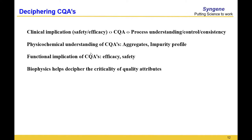It becomes important to physico-chemically understand the CQAs. When we say CQAs, we have aggregates and impurity profiles — including HCP and HCDNA — which become important parameters. From a product quality attribute standpoint, aggregation, deamidation, any kind of degradation, and the product's vulnerability to cleavage all become CQAs, depending on which of these attributes you need to control in your process. The functional implication of CQAs is ultimately safety and efficacy, and the physico-chemical understanding required is a highly demanding and extensive undertaking — and this is where biophysics and structural biology helps a lot.